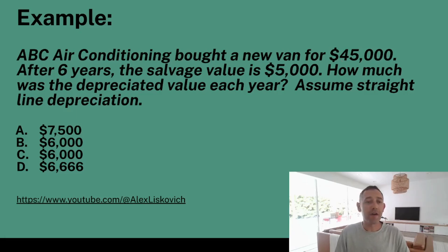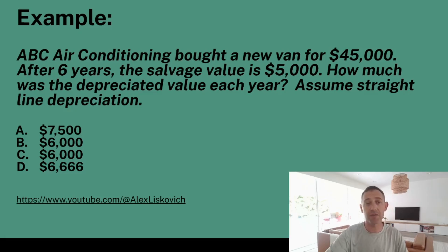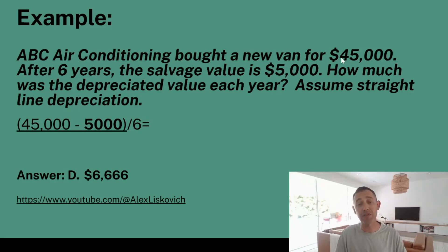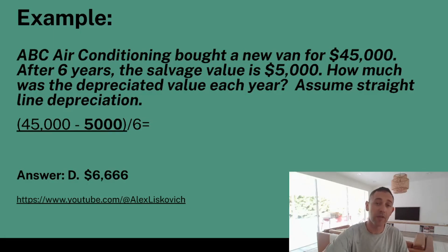ABC Air Conditioning bought a new van for $45,000. After six years, the salvage value is $5,000. How much was the depreciated value each year? Assume straight-line depreciation. The answer is D — $6,666. So $45,000 minus $5,000 equals $40,000, divided by a six-year lifespan, which equals $6,666. Fairly simple. Just pay attention to the values they're giving you and you're going to be okay.